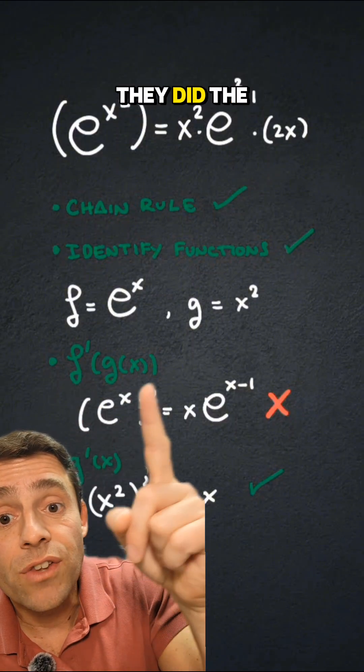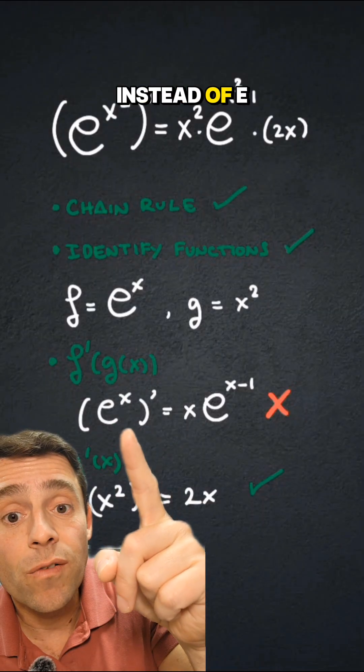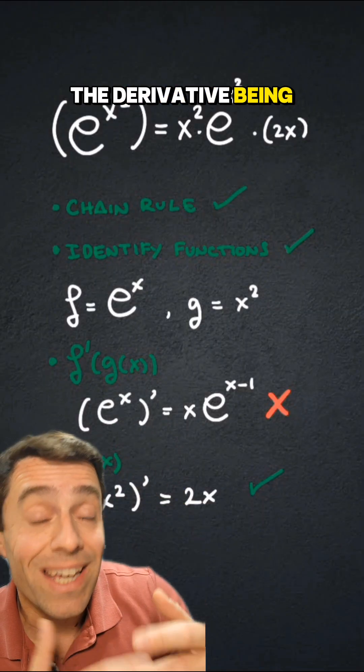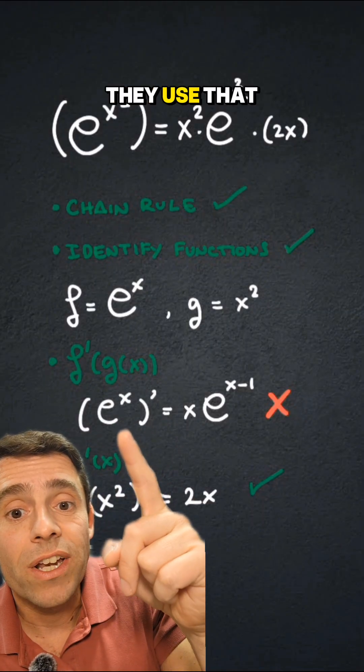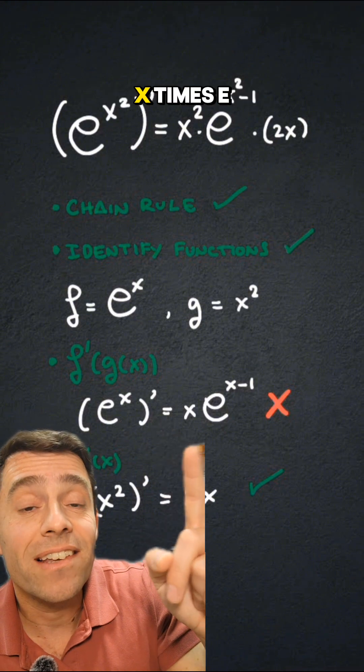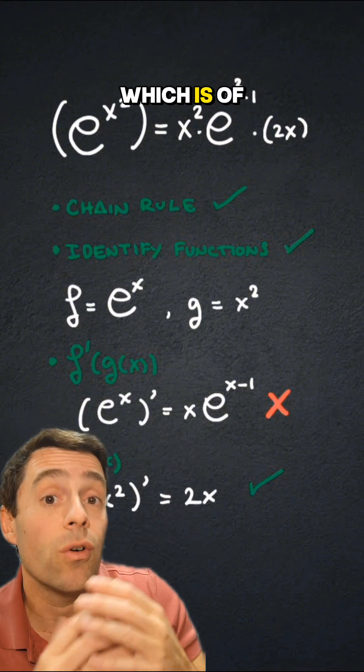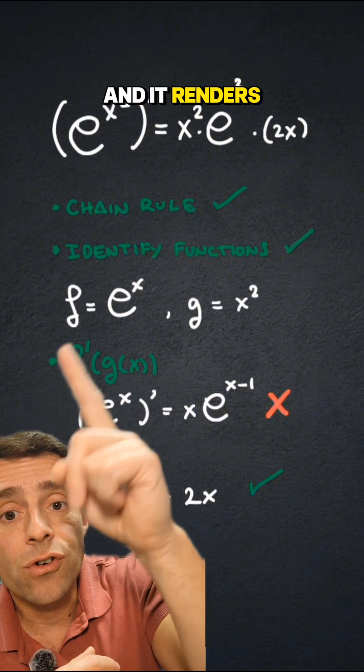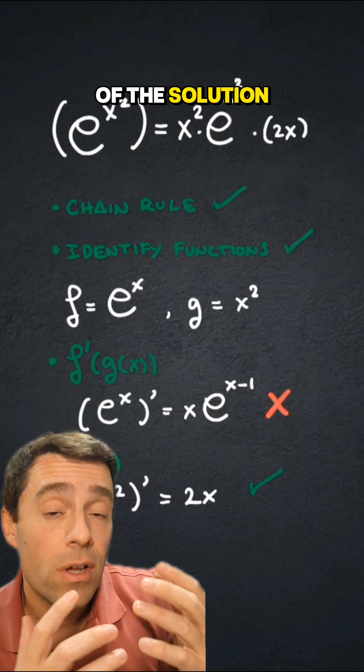But then when they did the derivative of f, instead of e to the x derivative being e to the x, they used that e to the x derivative is x times e to the x minus one, which is of course wrong and it renders all that part of the solution wrong.